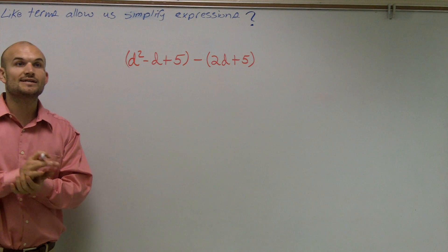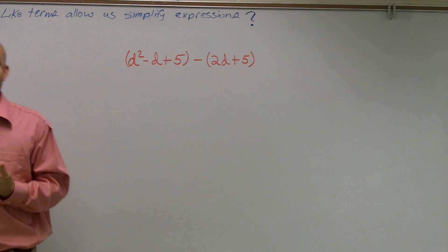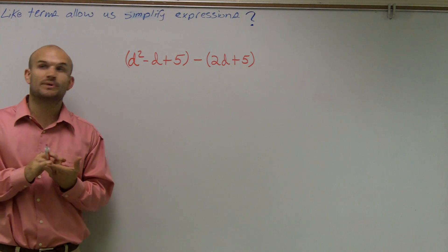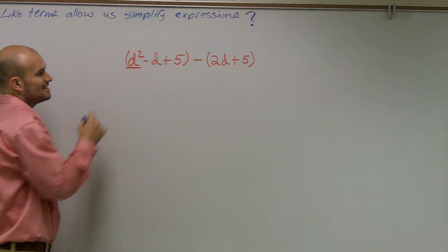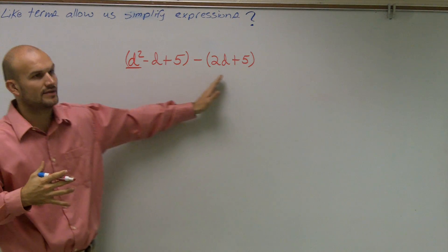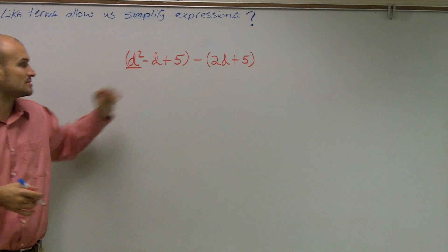Remember, like terms are when we have the exact same base and the exact same exponent for our polynomial. So when we look up here, you'll notice there's a d squared. Is there any other term that has a d squared in there? No, so d squared is my only term that I can use.